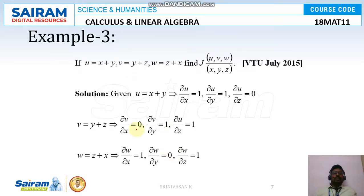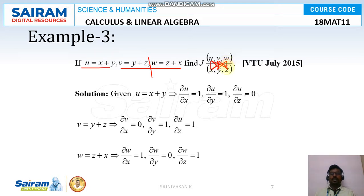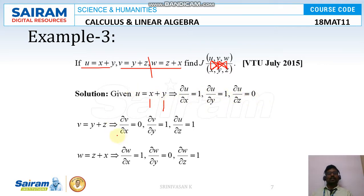Third problem: u = x + y, v = y + z, and w = x + z. This gives a 3×3 matrix. We need ∂u/∂x, ∂u/∂y, ∂u/∂z, then ∂v/∂x, ∂v/∂y, ∂v/∂z, then ∂w/∂x, ∂w/∂y, ∂w/∂z. For u: ∂u/∂x = 1, ∂u/∂y = 1, ∂u/∂z = 0 (no z term). For v: ∂v/∂x = 0 (no x term).